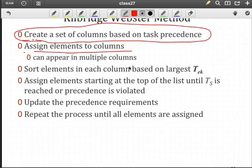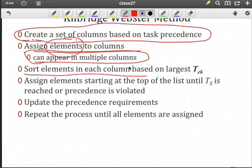And also note that the elements, by elements we mean the individual tasks, are assigned to the columns. They can appear in multiple columns. Of course they can only be assigned once. And then we sort elements in each column. So from here on out it looks like the largest candidate rule as we proceed from column to column. So we have to allocate all the elements in a given column before we can move to the next one.